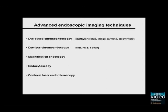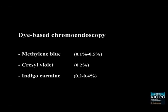This video focuses on advanced endoscopic imaging techniques for the early detection of dysplasia in ulcerative colitis, including dye-based and dye-less chromoendoscopy, magnification endoscopy, endocytoscopy, and confocal laser endomicroscopy.